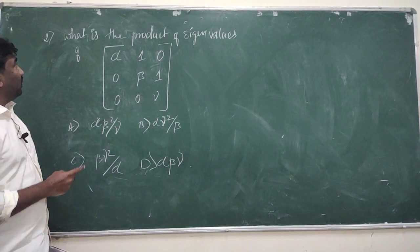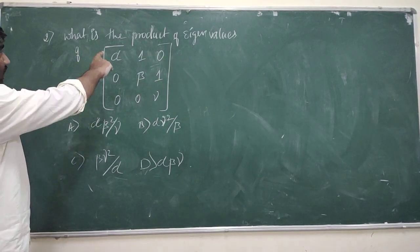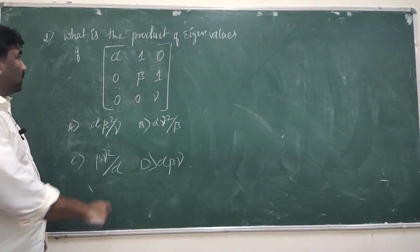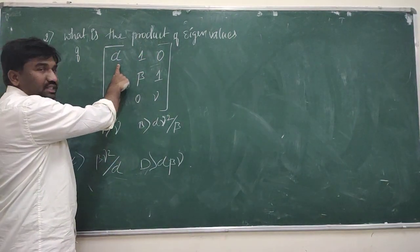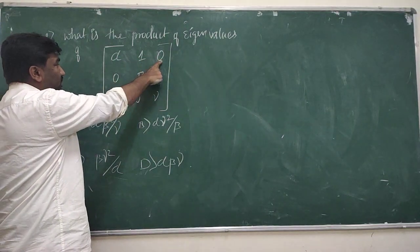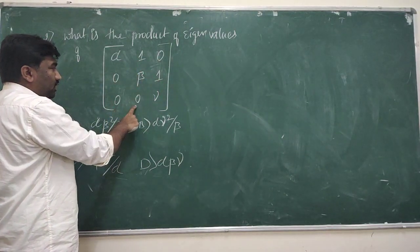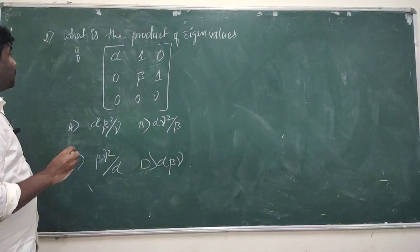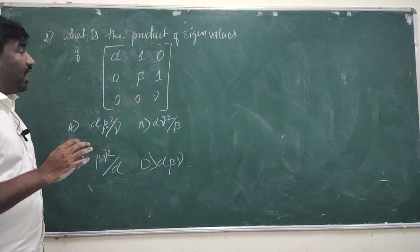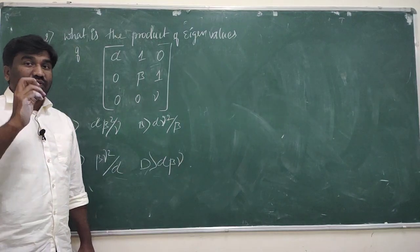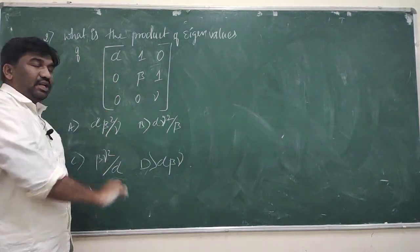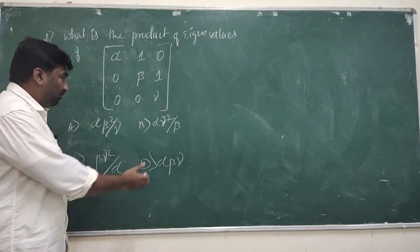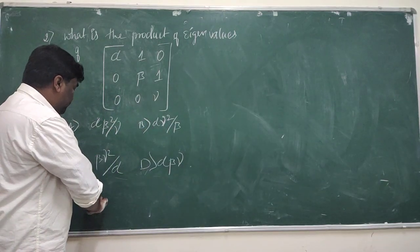Question number 2 asks for the product of eigenvalues of the matrix with elements α, 1, 0, 0, β, 1, 0, 0, γ (a 3×3 matrix). We have to find the eigenvalues and take their product.